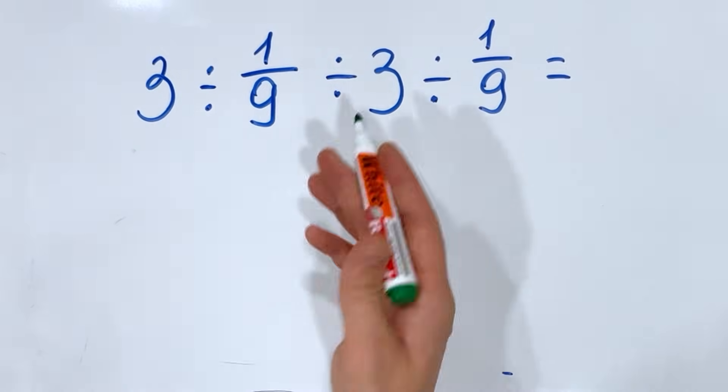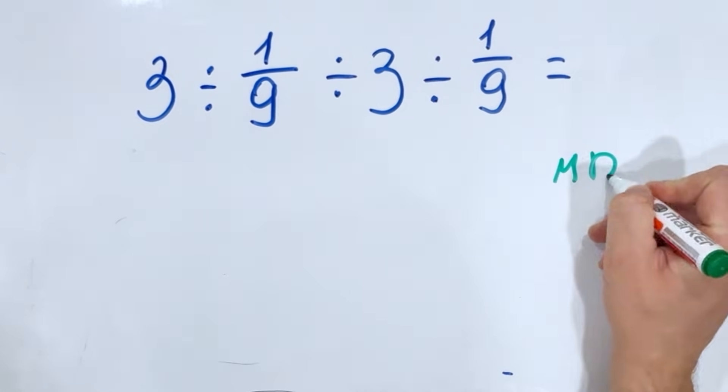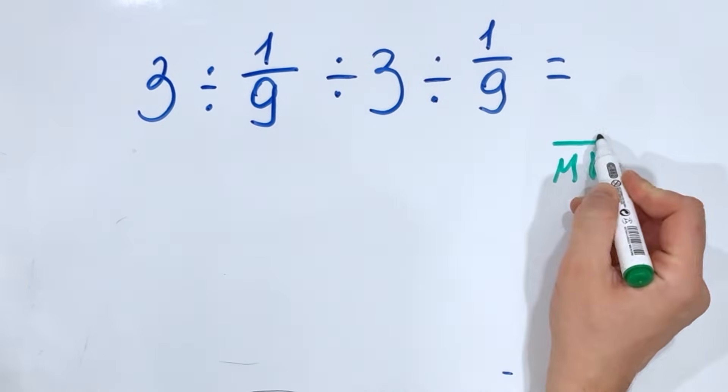First is the rule of the order of operation PEMDAS, where multiplication and division must be done from left to right.